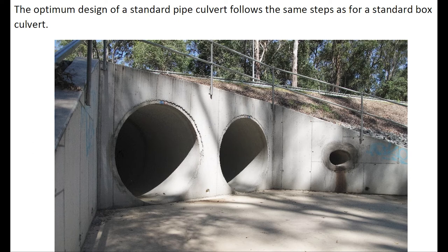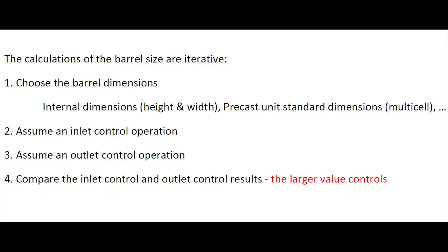The optimum design of a standard pipe culvert follows the same steps as for a standard box culvert. The calculations are iterative: we choose the barrel dimensions, assume an inlet control operation, then assume an outlet control operation, and compare the inlet control and outlet control results.